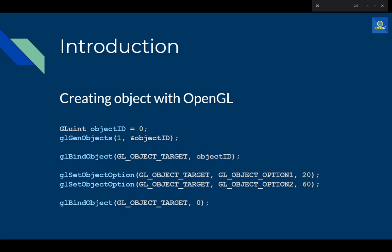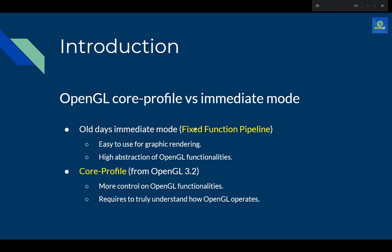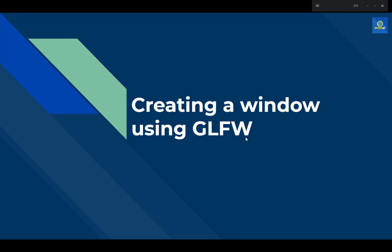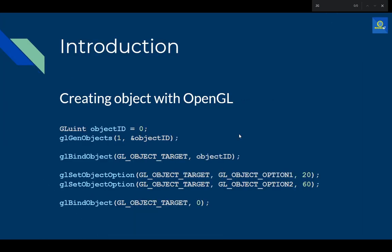I hope this gives you an overview of how OpenGL operates. What you should take from this video: OpenGL is a state machine; it has two profiles — the core profile and the fixed function pipeline; the core profile is harder to implement but gives more flexibility, while the fixed function pipeline is easier but less controllable. In the next video we'll start creating windows using GLFW and getting everything installed.